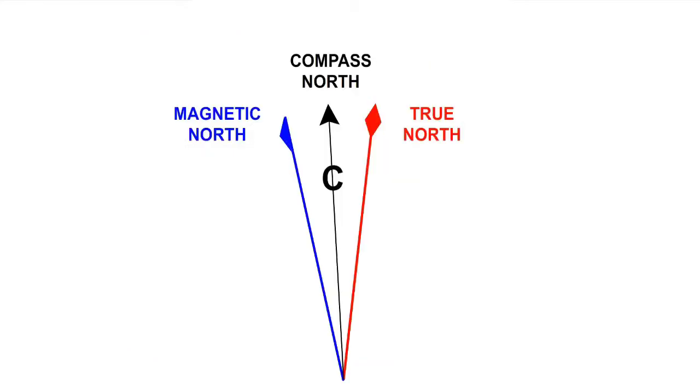Deviation is defined as the angle measured at a point between the direction indicated by a compass needle and the direction of magnetic north. The compass actually points to compass north, as opposed to magnetic north. However, compass north is not a geographic location. It is merely magnetic north that is affected by local magnetic influences within the aircraft.